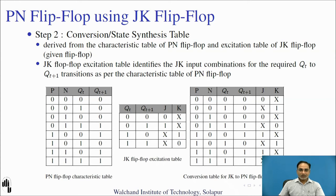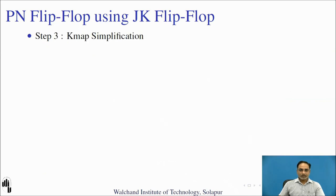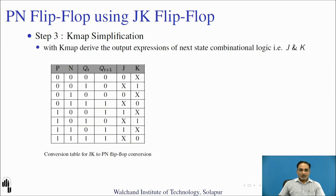Now let us use this conversion table to derive the J and K expressions required for the next-state logic. For that purpose we are using the Karnaugh map (KMAP) simplification method. With the KMAP we will derive the output expressions of the next-state combinational logic, that is J and K. We will use a three-variable KMAP with inputs P, N, and present state.